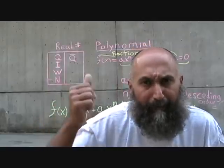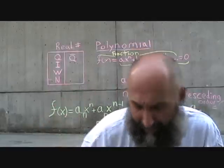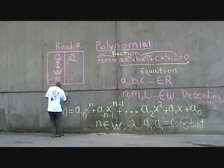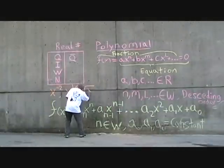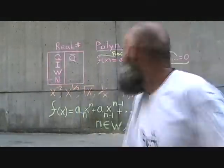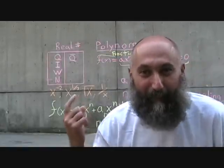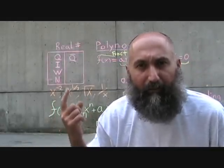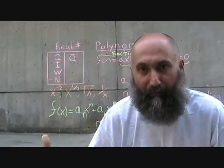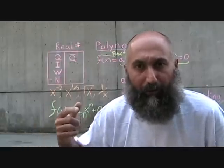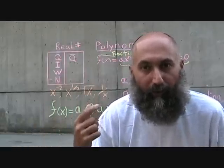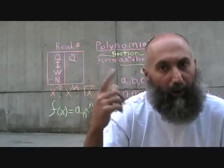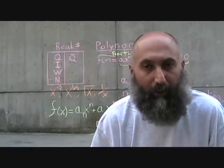Let me write down some of the ones you can't have. Anything in orange — for example, x to the power of negative 2, x to the power of 1/2, 3/2, or 5/2, the square root of x or any root of x, or 1 over x — x can't be in the denominator. Those are not considered to be polynomial functions or polynomial equations.